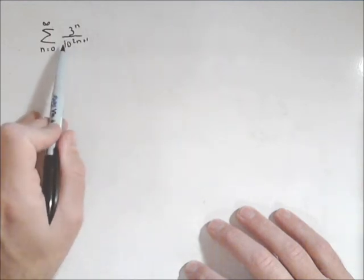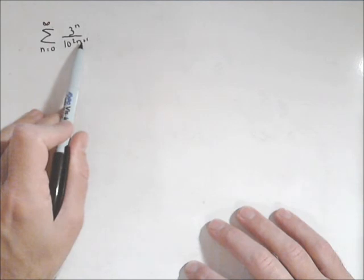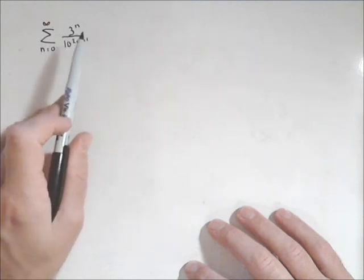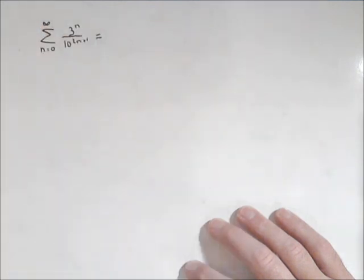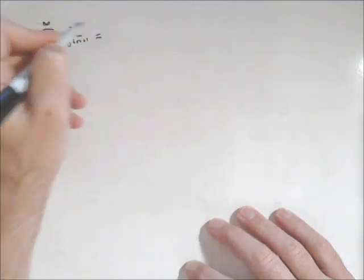In this one we have 3 to the n over 10 to the 2n plus 1. We want to rewrite this part as an exponential function so we can see what its common ratio is and if that common ratio is going to be less than 1.